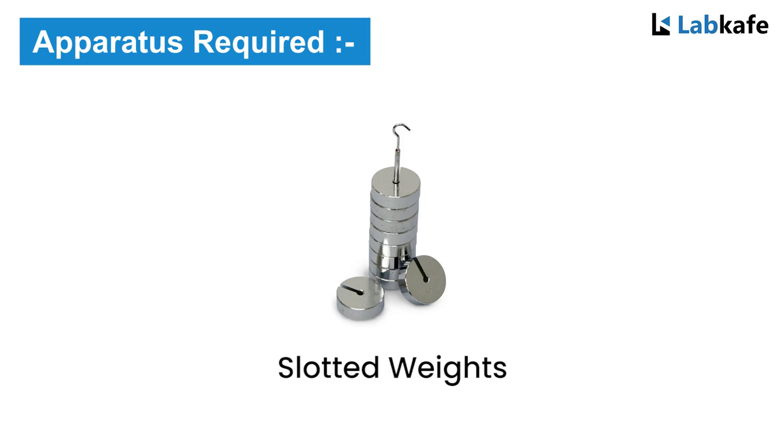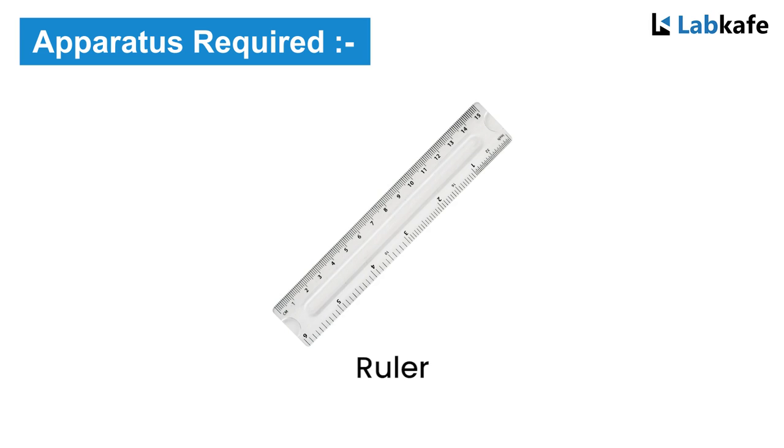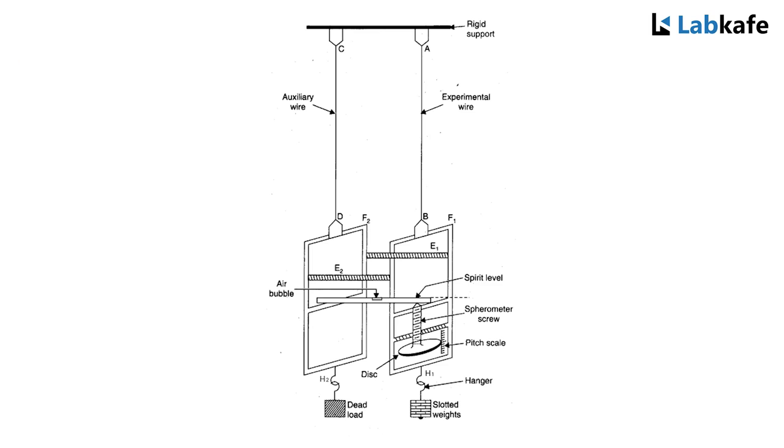Searle's apparatus consists of two metal frames F1 and F2 hinged together such that they can move relative to each other in a vertical direction. Each frame has torsion heads D and B at the upper side and hooks H1 and H2 at the lower side.